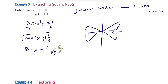Tan is TOA — opposite over adjacent — so opposite is 1 and adjacent is √3. This is a 1, √3, 2 triangle, so the angle is 30 degrees. All four triangles give a 30-degree reference angle. In radians, 30 degrees is π/6.